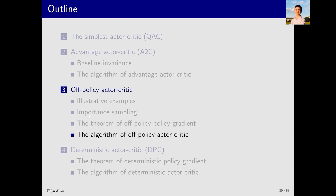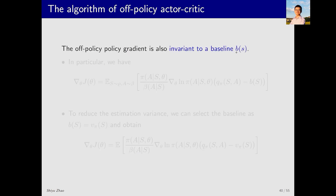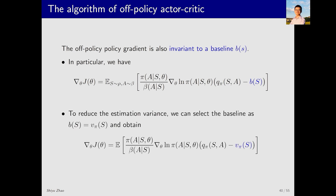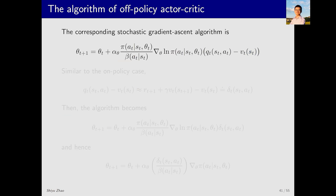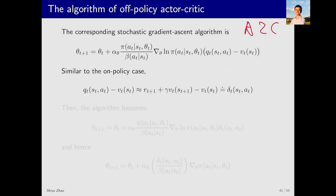With the gradient expression, we can apply gradient ascent to optimize the objective function. We can also add a baseline without changing the gradient — we usually set the baseline as the state value V_pi(s). Since the true gradient contains an expectation we don't know, we use a stochastic gradient to approximate it. This gives us the off-policy policy gradient algorithm, similar to A2C. We replace q_t - v_t with the TD error: r_{t+1} + gamma * V_t(s_{t+1}) - V_t(s_t), which can also be interpreted as the advantage function.